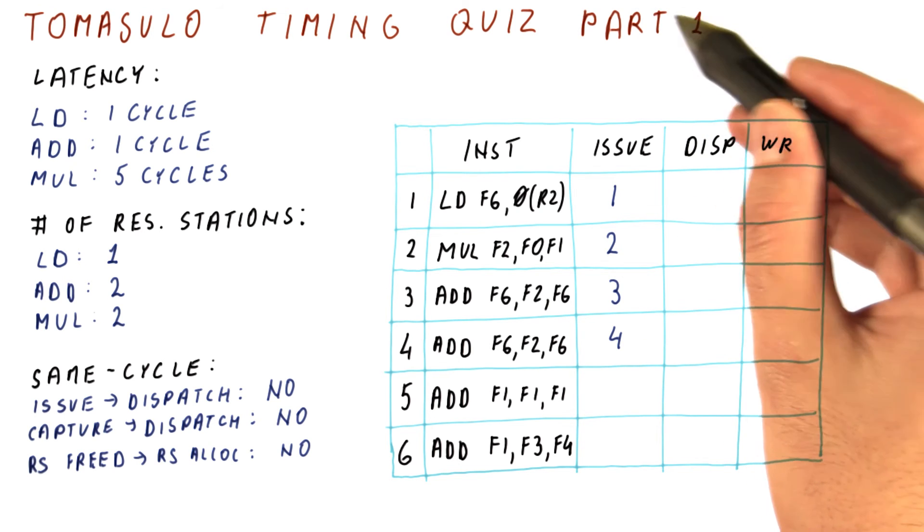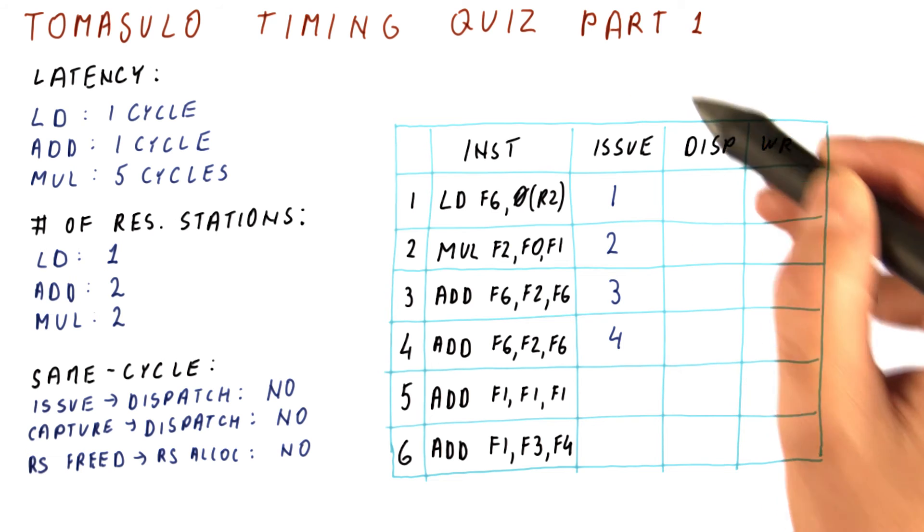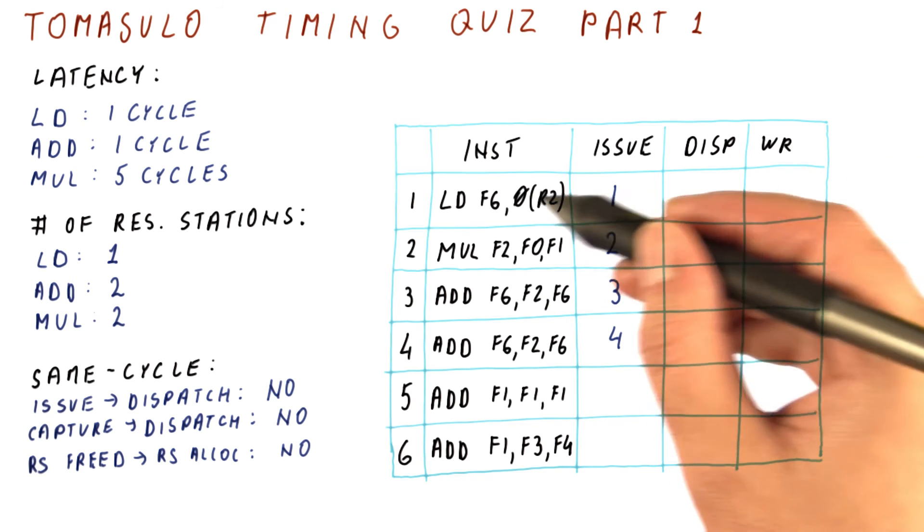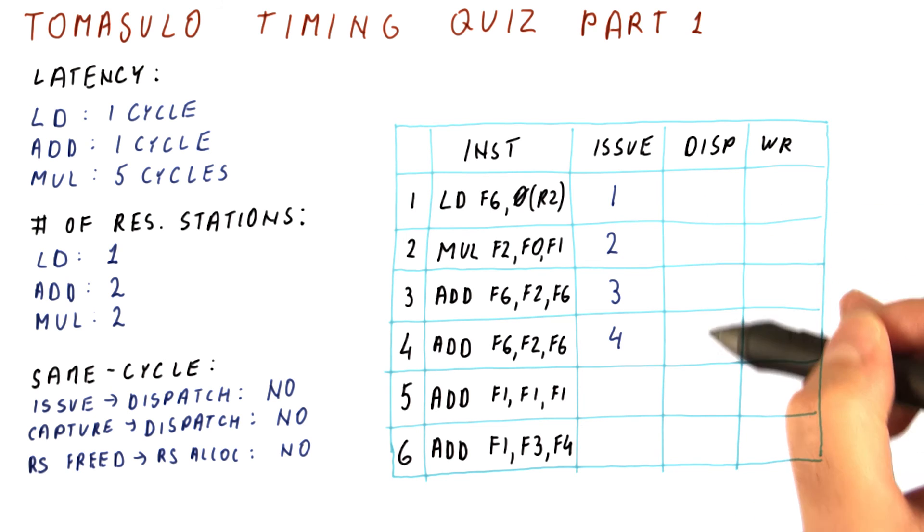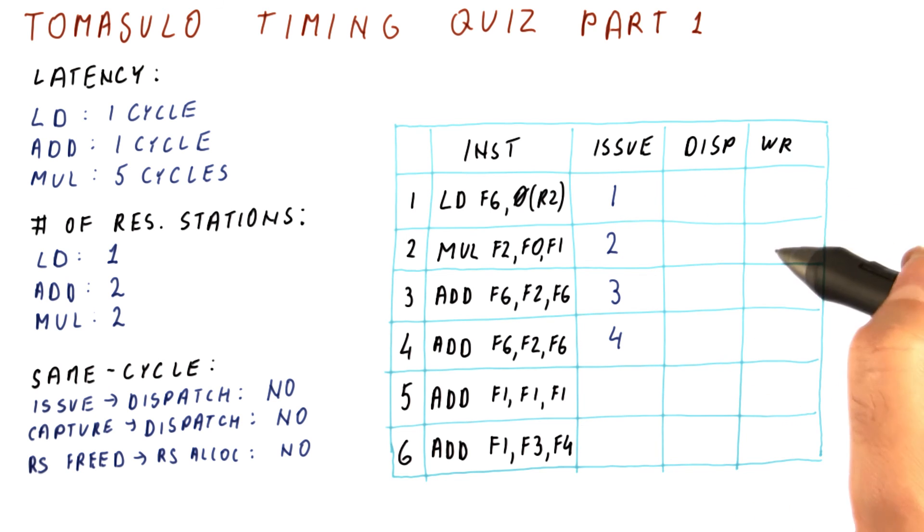This quiz has two parts. Part one is for you to figure out, for these four instructions that issue in cycles one, two, three, and four, when do they dispatch for each one of them? And when does each one of them write its result?